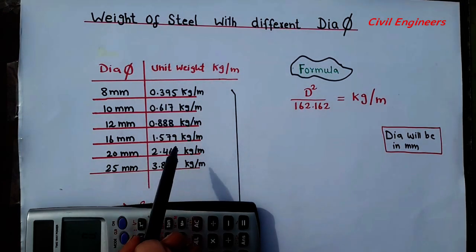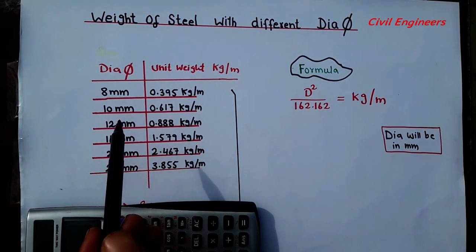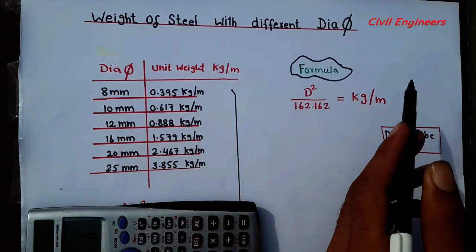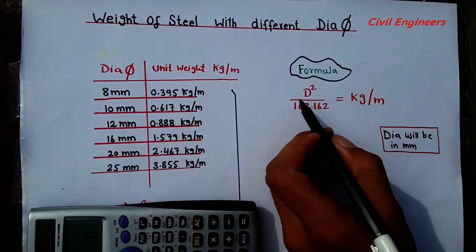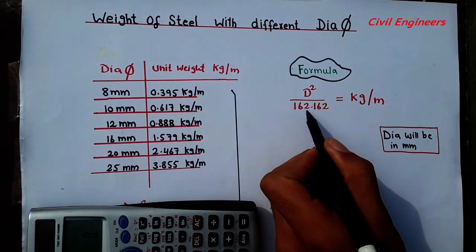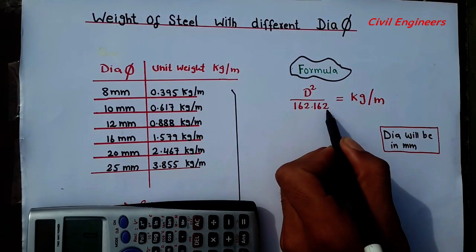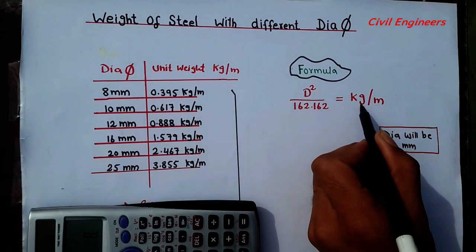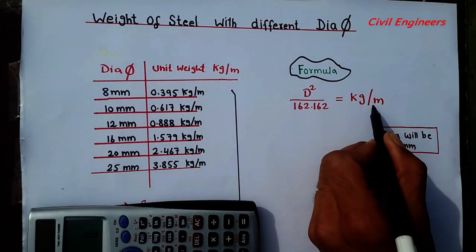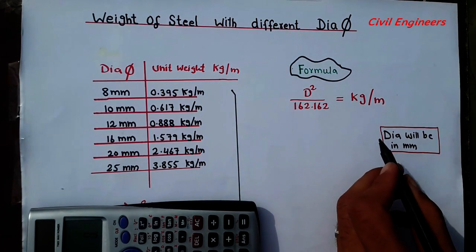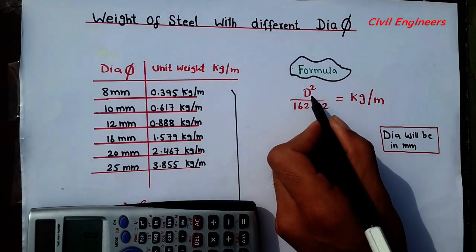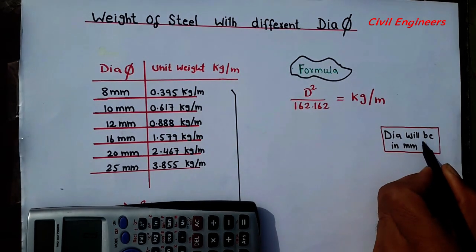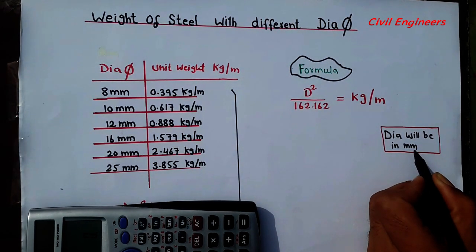For all these unit weight we have to find out the weight of steel with this formula. So we have a formula: D square divided by 162.162. If you apply this formula it will give you the unit weight of the steel in kg per meter. But never forget one thing. Remember this: the dia will be put in this D square, the dia will be in mm.